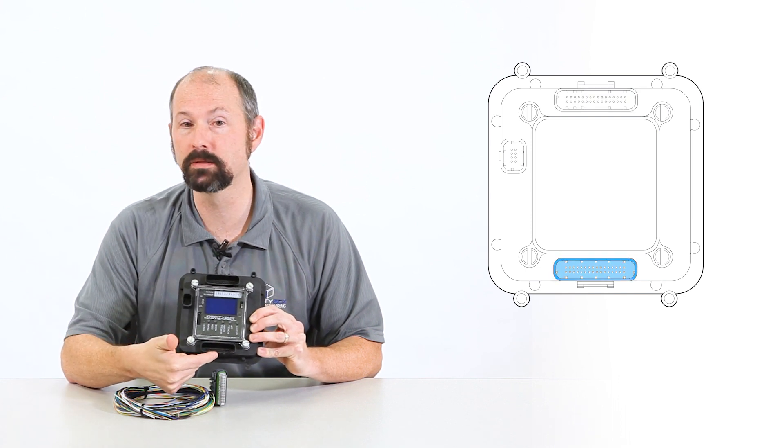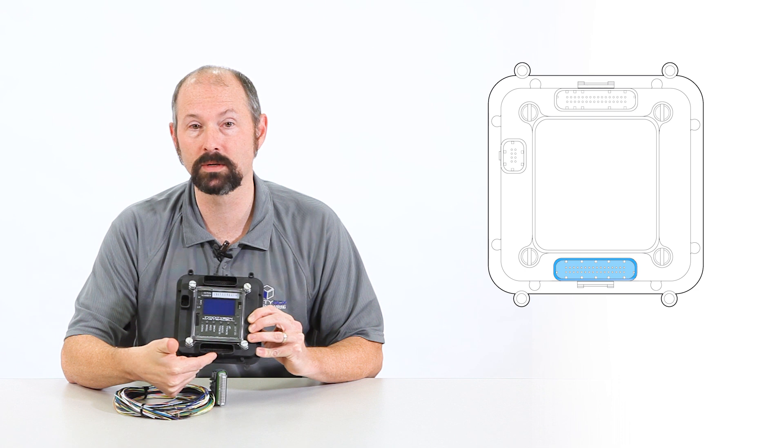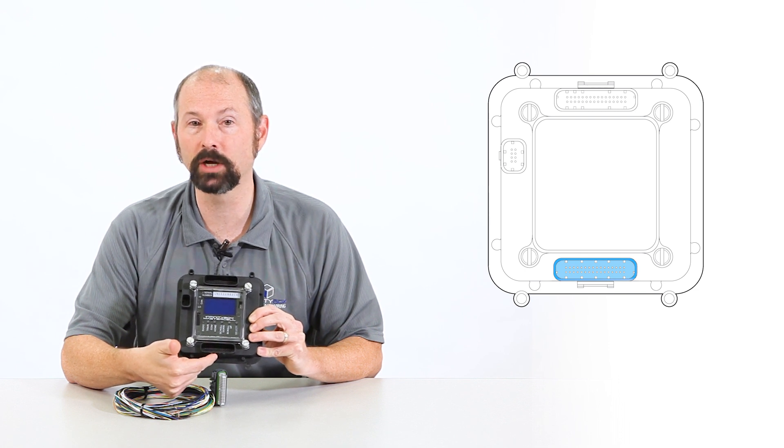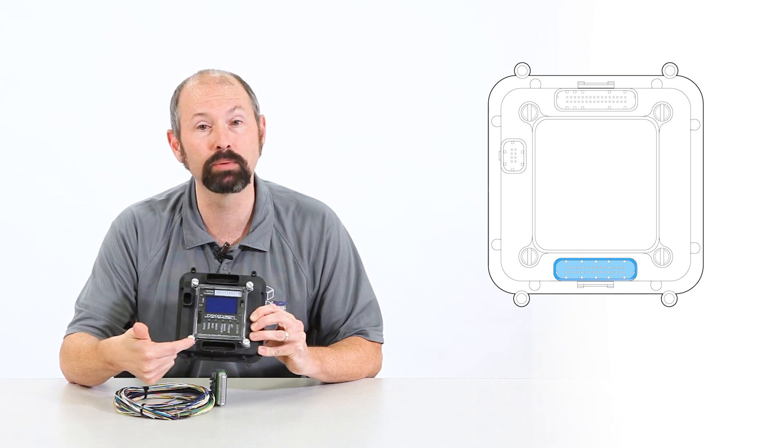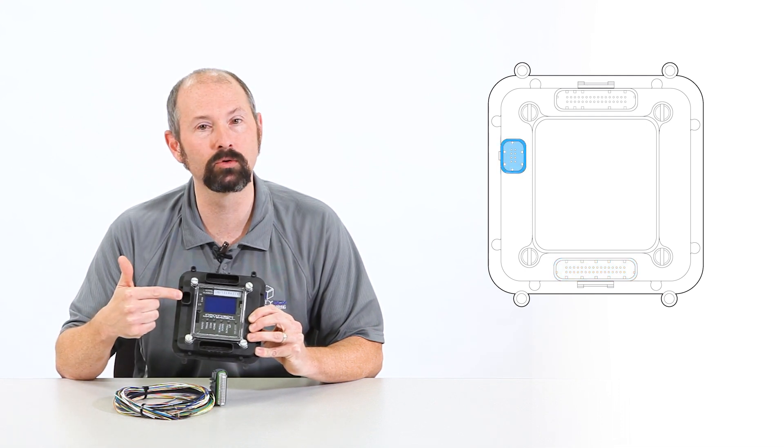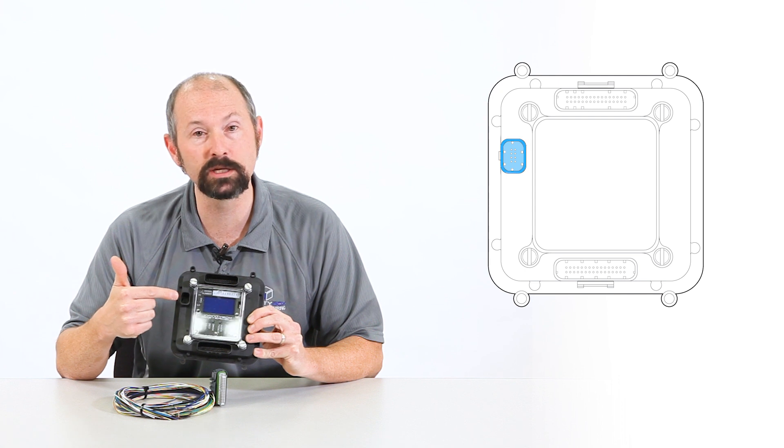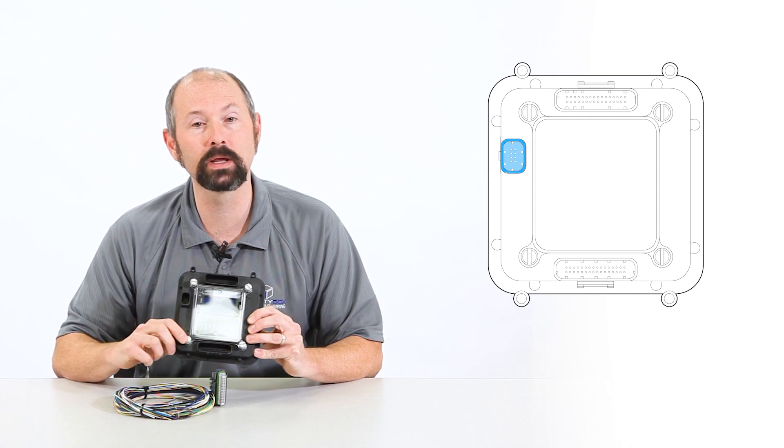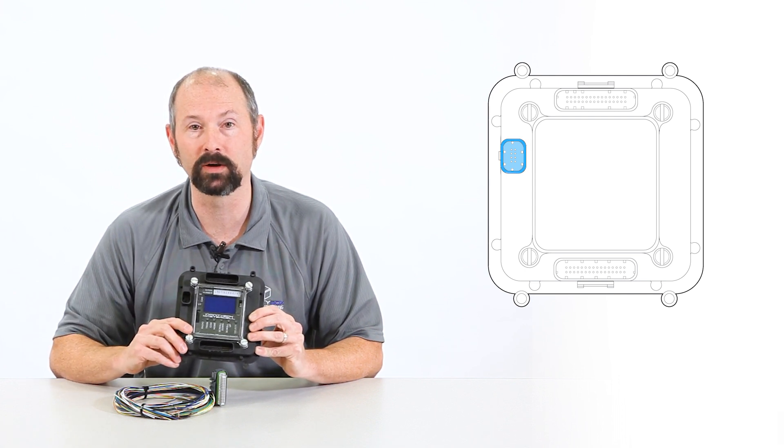The bottom port is the MasterCell B input harness. And not every kit has that, so check your configuration sheet. But this would be for inputs 25 through 48. And then the CAN connector, or our controller area network, plugs into this port right here. And that's what connects the MasterCell to the rest of the InfinityBox system.